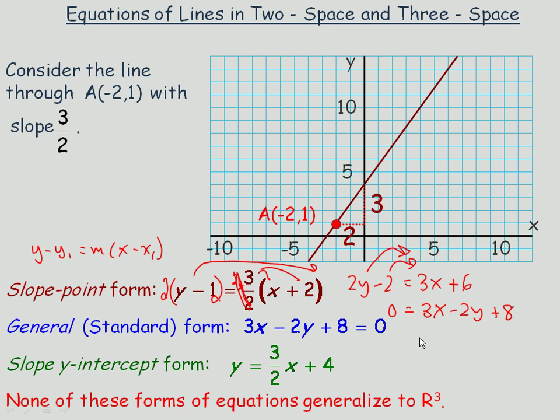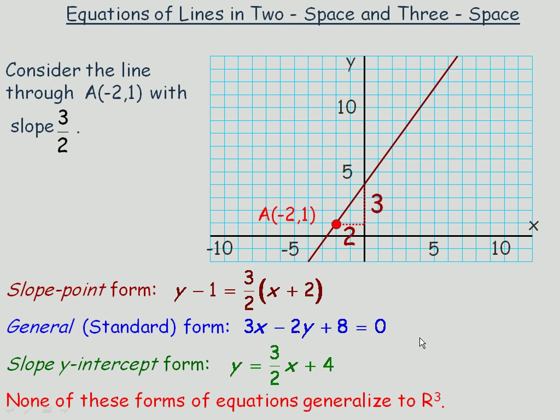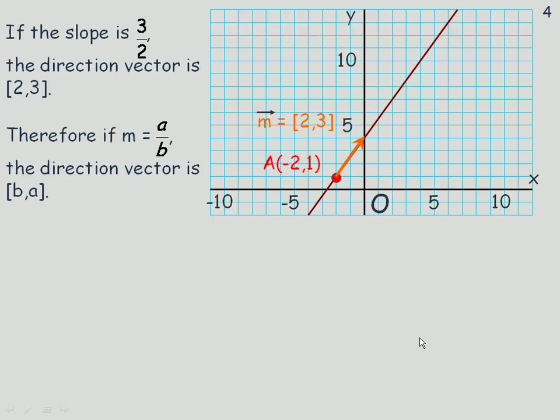We're talking about equations of lines in three-dimensional space. In three-space, there is no concept of slope as in rise over run. There are directions for lines, but we don't refer to it as a slope in three-space. I'm going to show you the new equations in two-dimensional space first, and then we'll generalize to three-dimensional space.